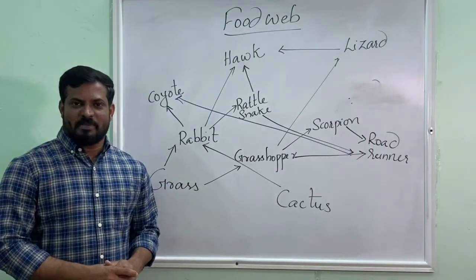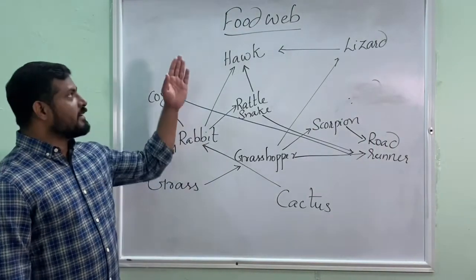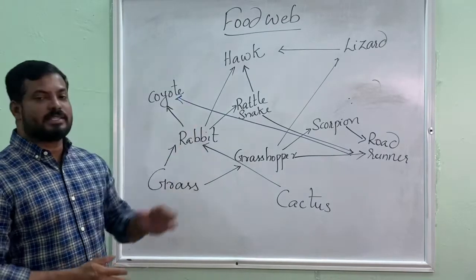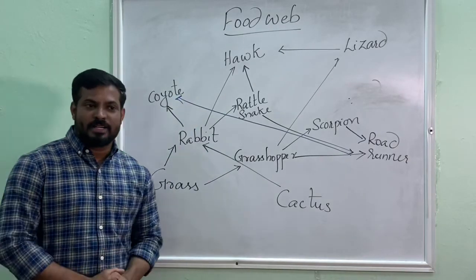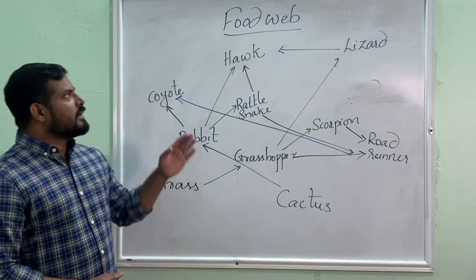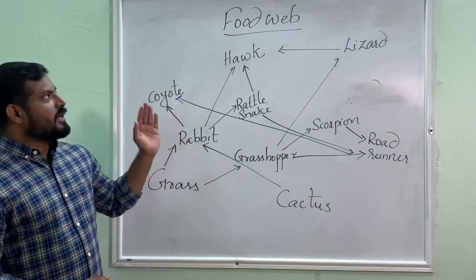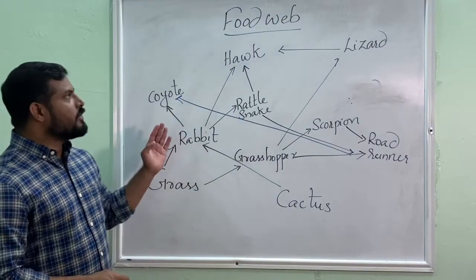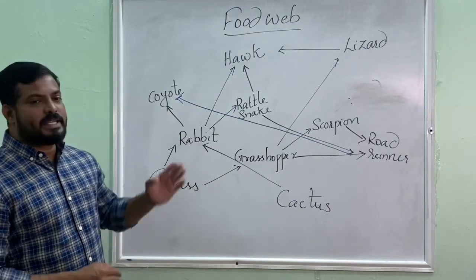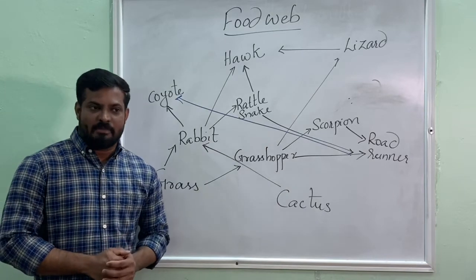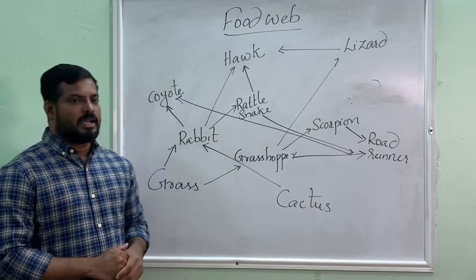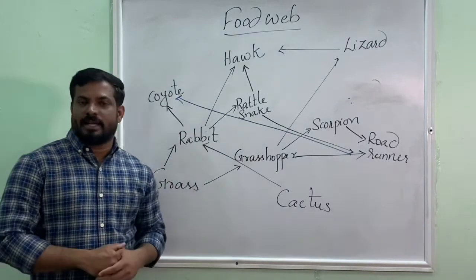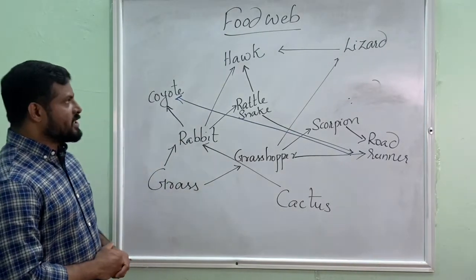Now we will discuss about food web. In a food web various food chains are linked together. A food web is a description of how various types of food chains in a habitat are linked together and it shows how the food and energy pass through the habitat.